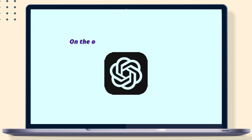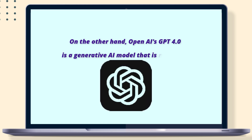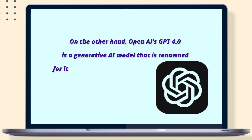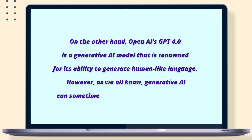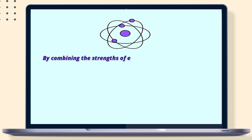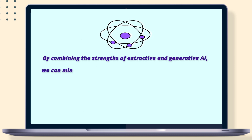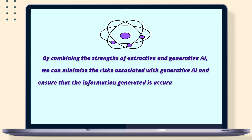On the other hand, OpenAI's GPT 4.0 is a generative AI model that is renowned for its ability to generate human-like language. However, as we all know, generative AI can sometimes lead to misinterpretation and fabrication of information. By combining the strengths of extractive and generative AI, we can minimize the risks associated with generative AI and ensure that the information generated is accurate and reliable.